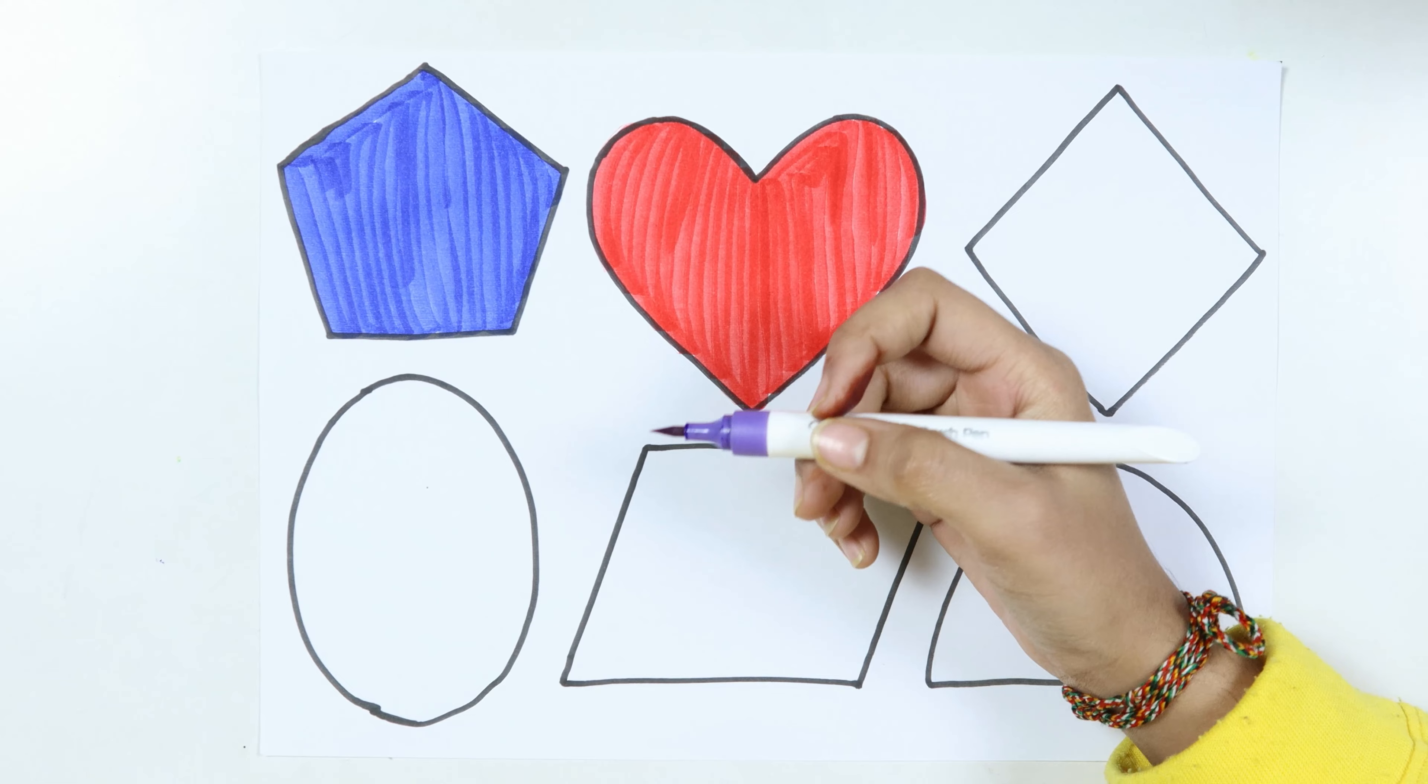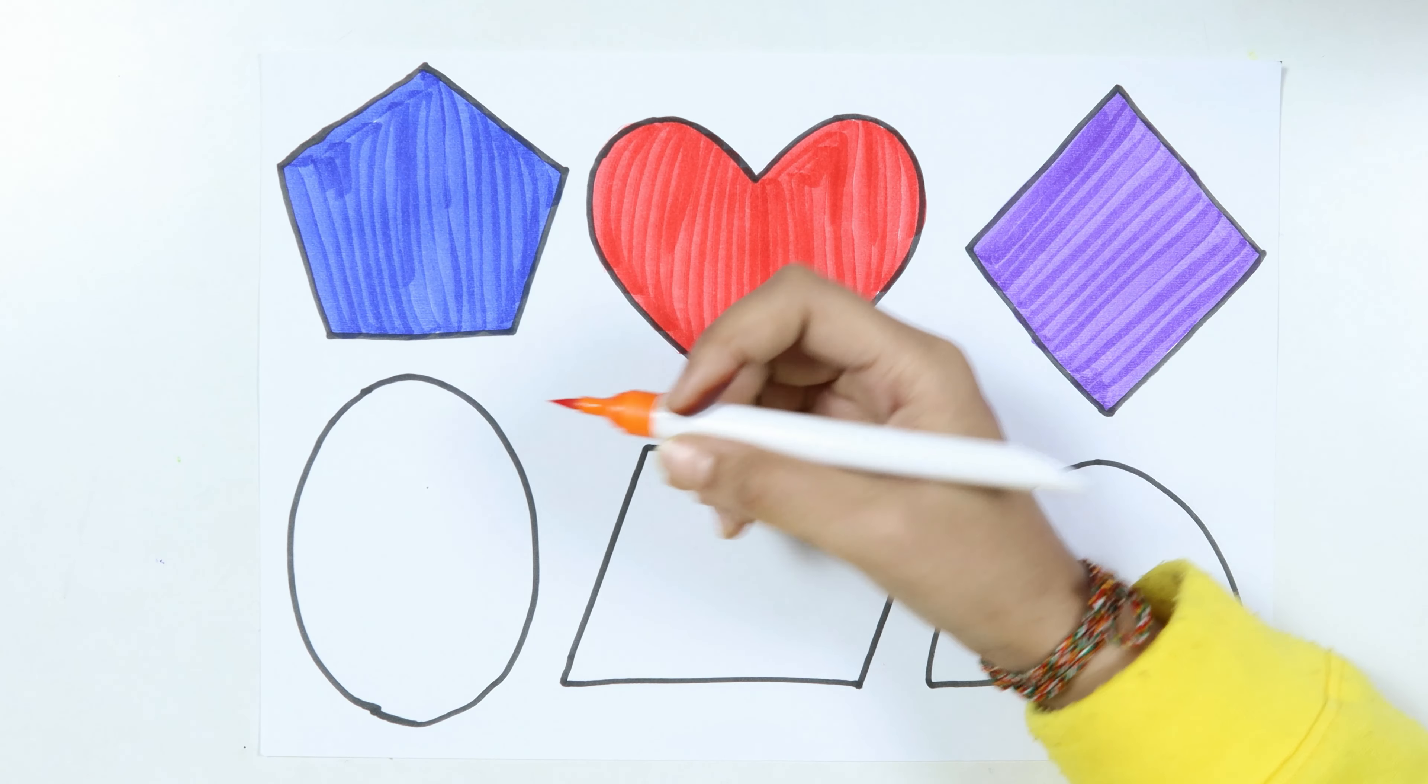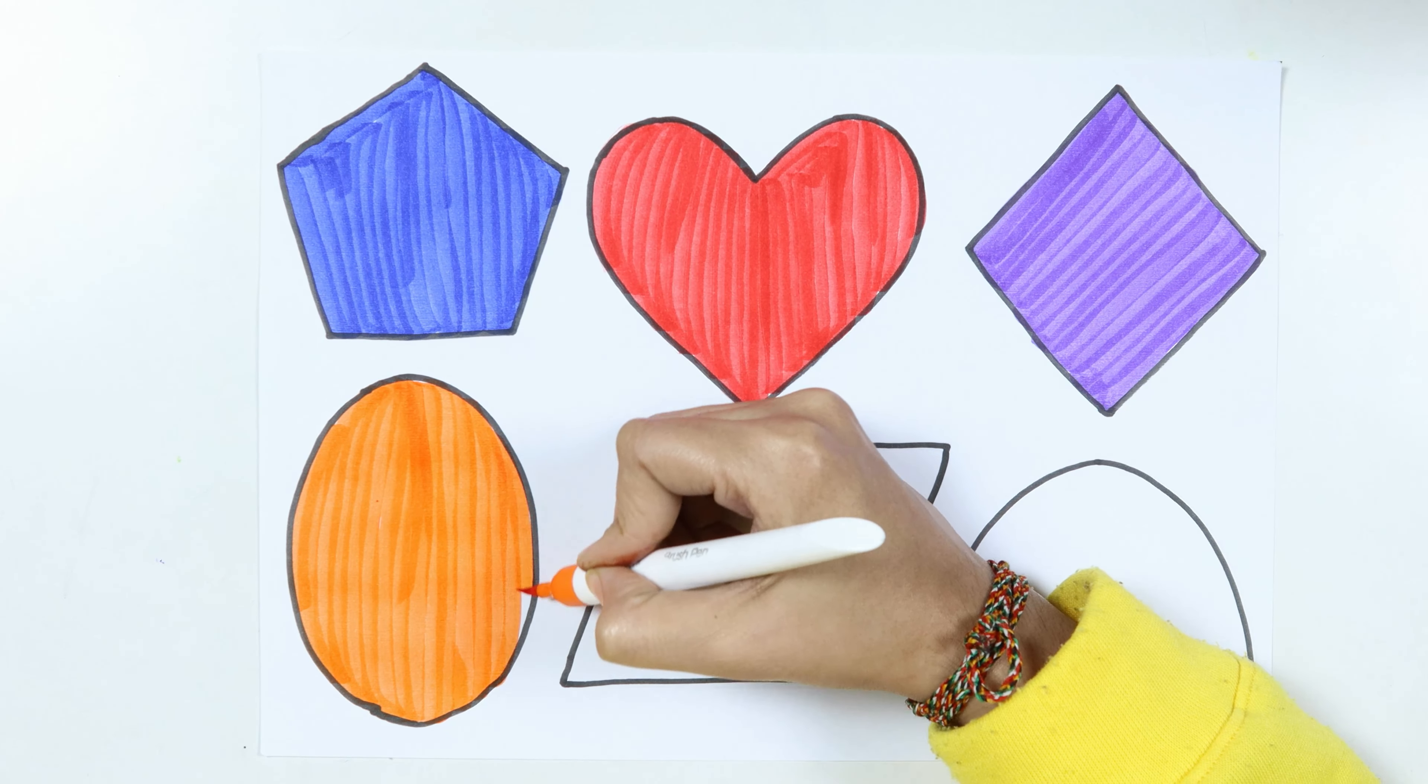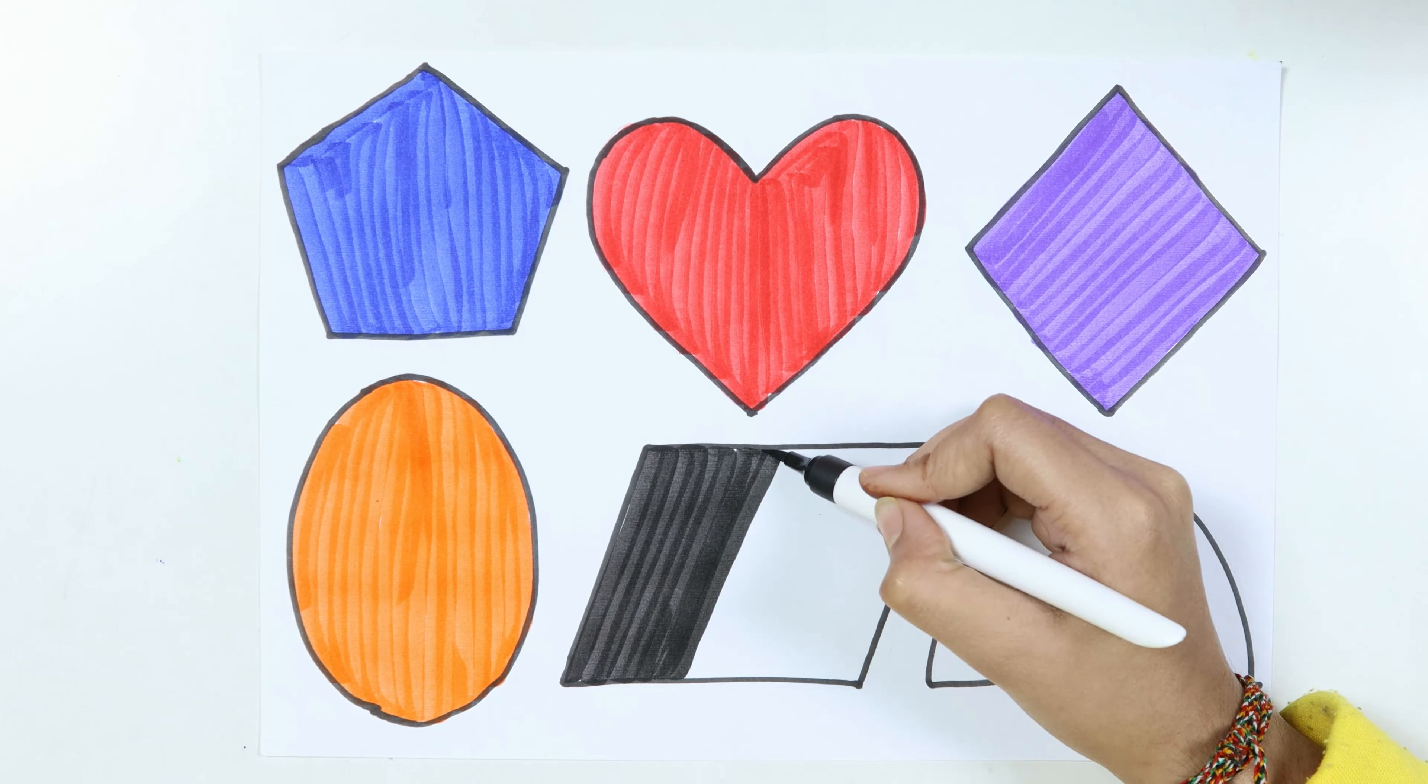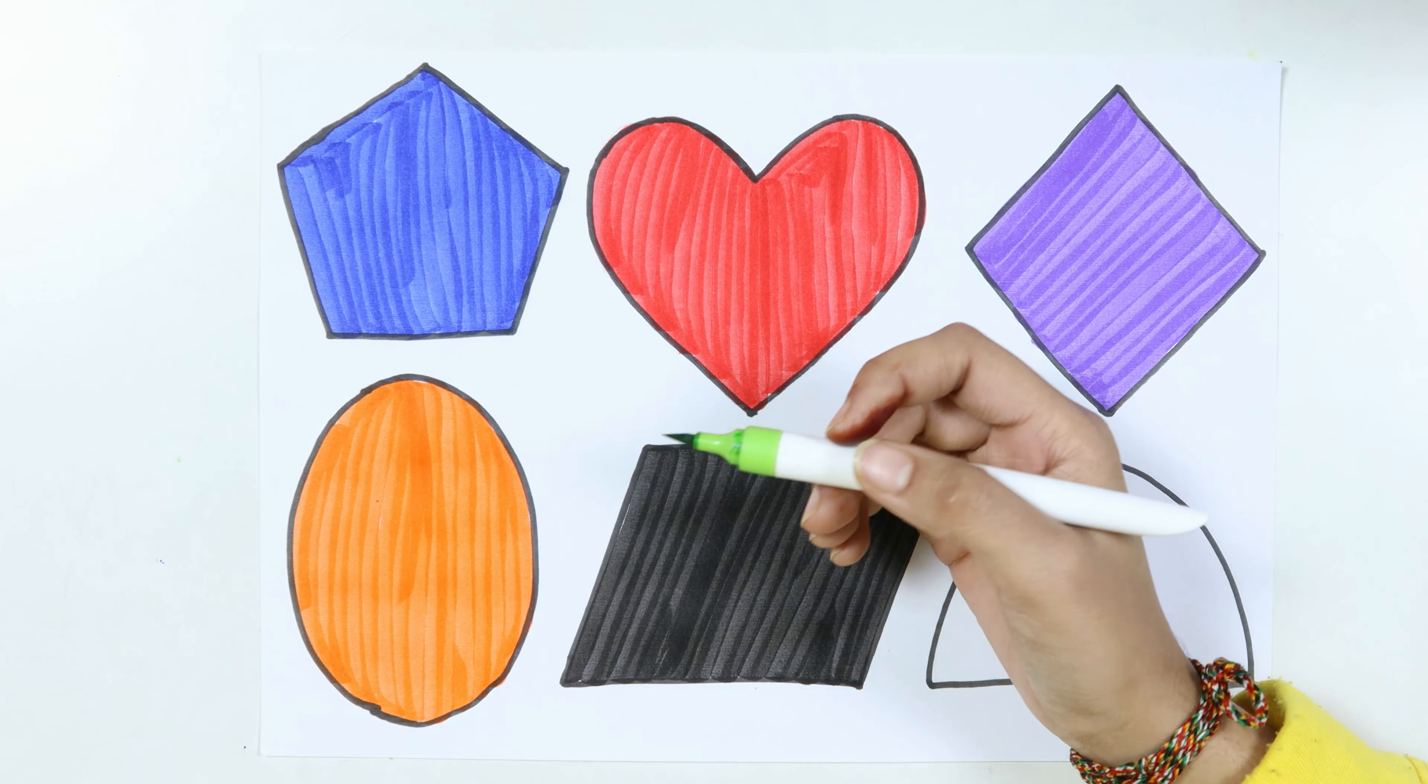Heart violet color. Rhombus orange color. Ellipse black color. Parallelogram light green color.